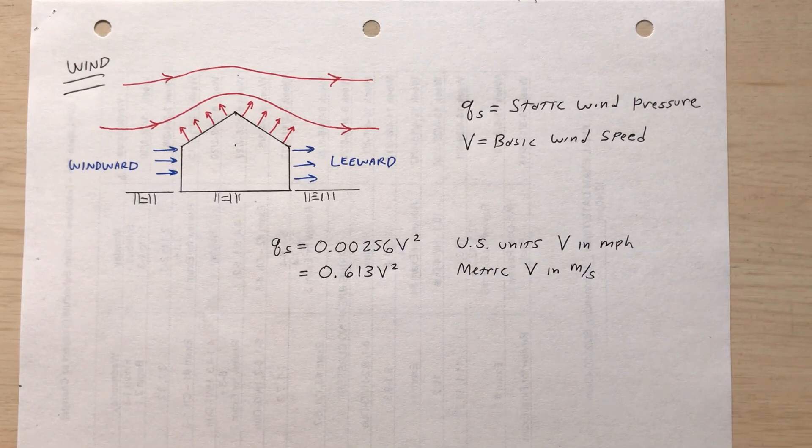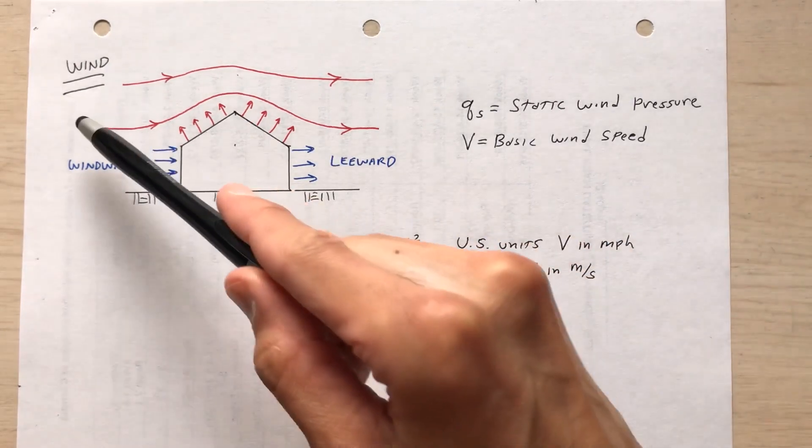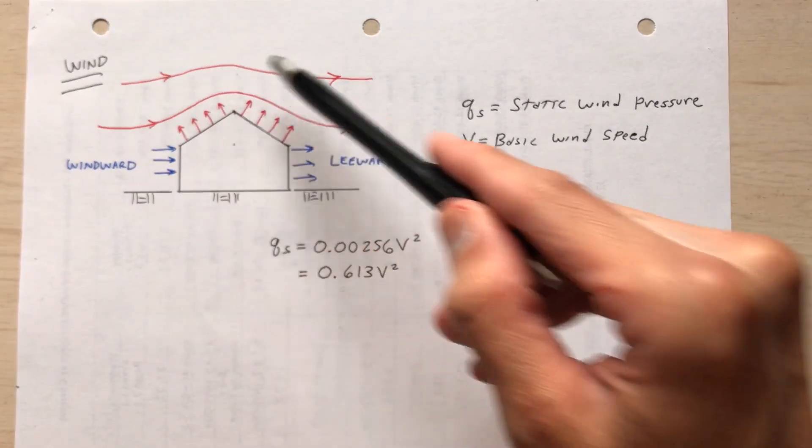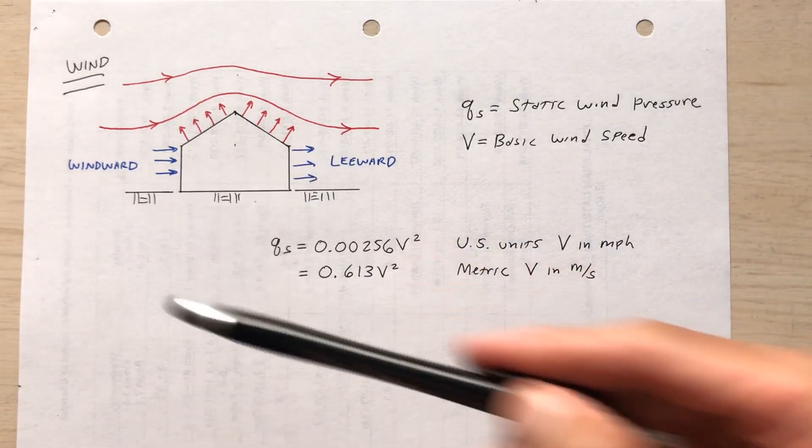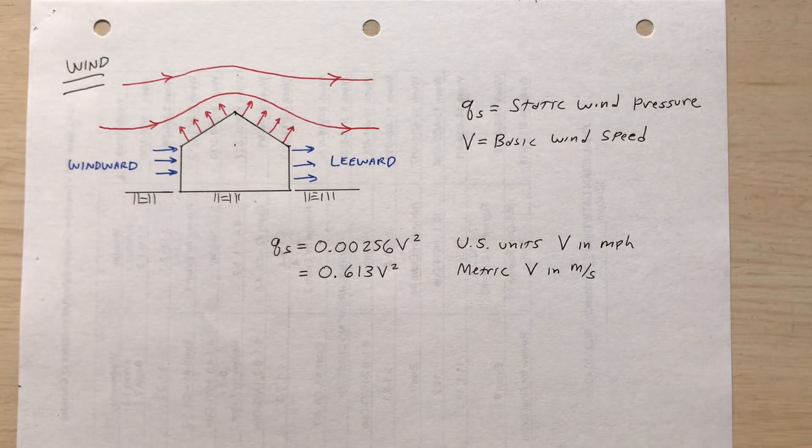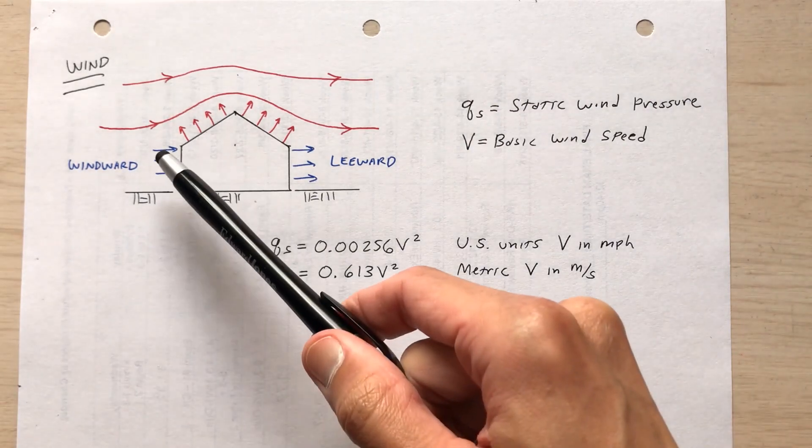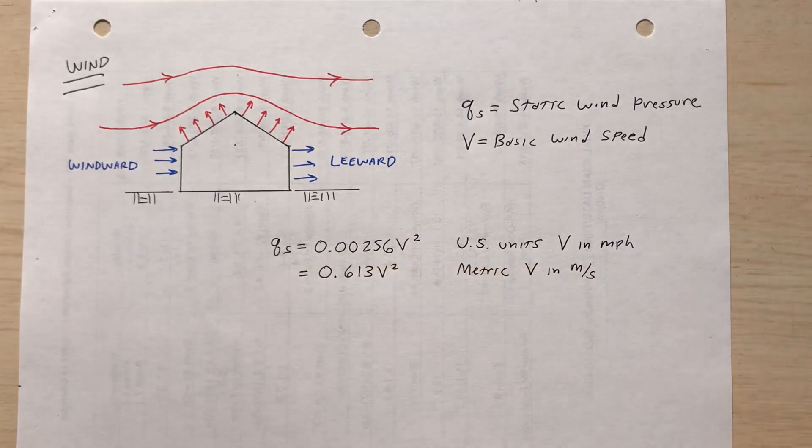Now with regards to wind pressure, these represent the flow of air, the flow of the wind. So I've got a house here. As the wind hits this house, we've got a windward side, that's the side that the wind is hitting directly, and then there's a leeward side.